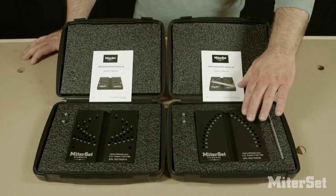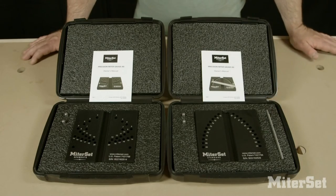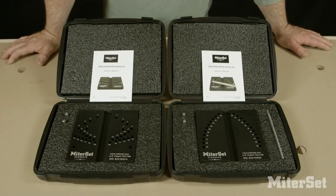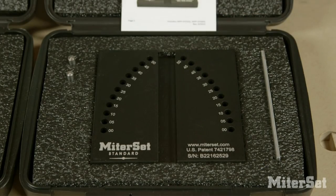MiterSet Standard is set up in five-degree increments which allows you to set your miter gauge for cutting from zero up to fifty-two and a half degrees for perfect miter joints.